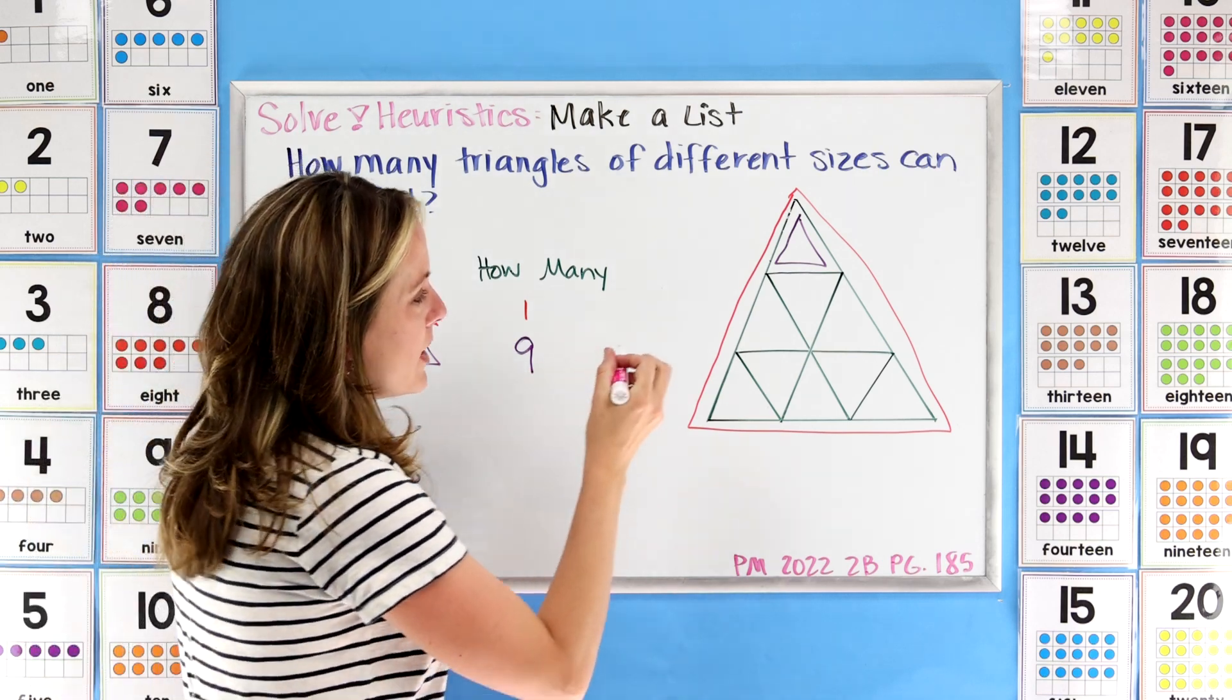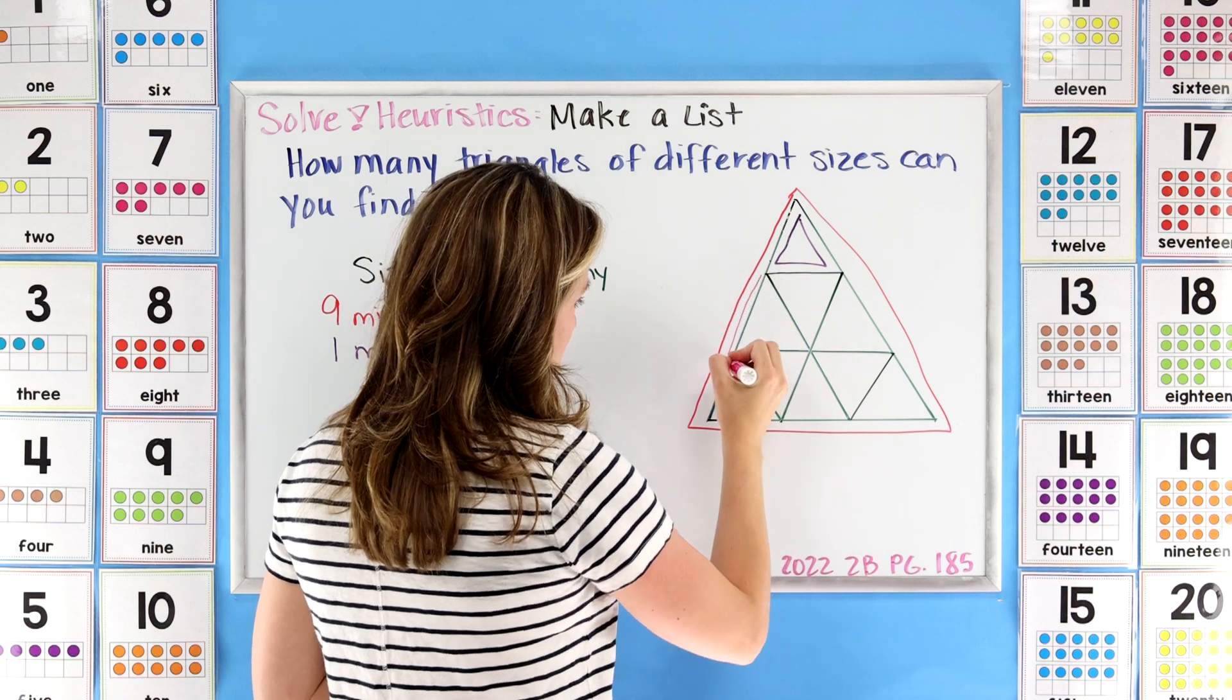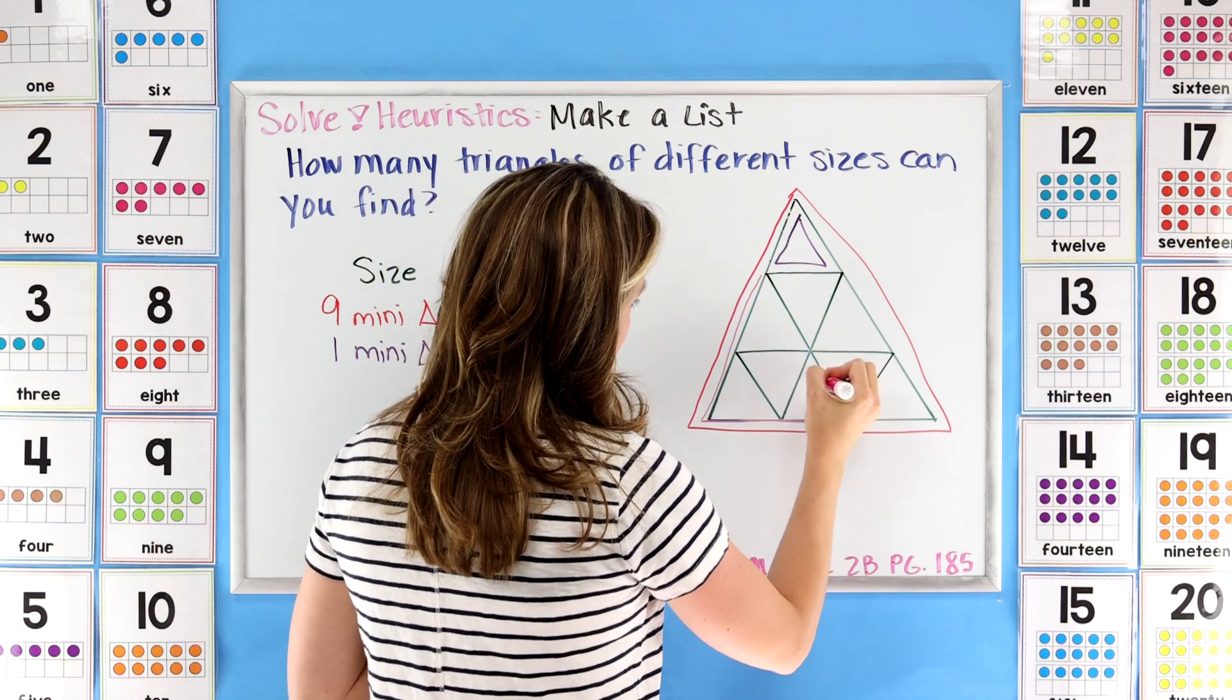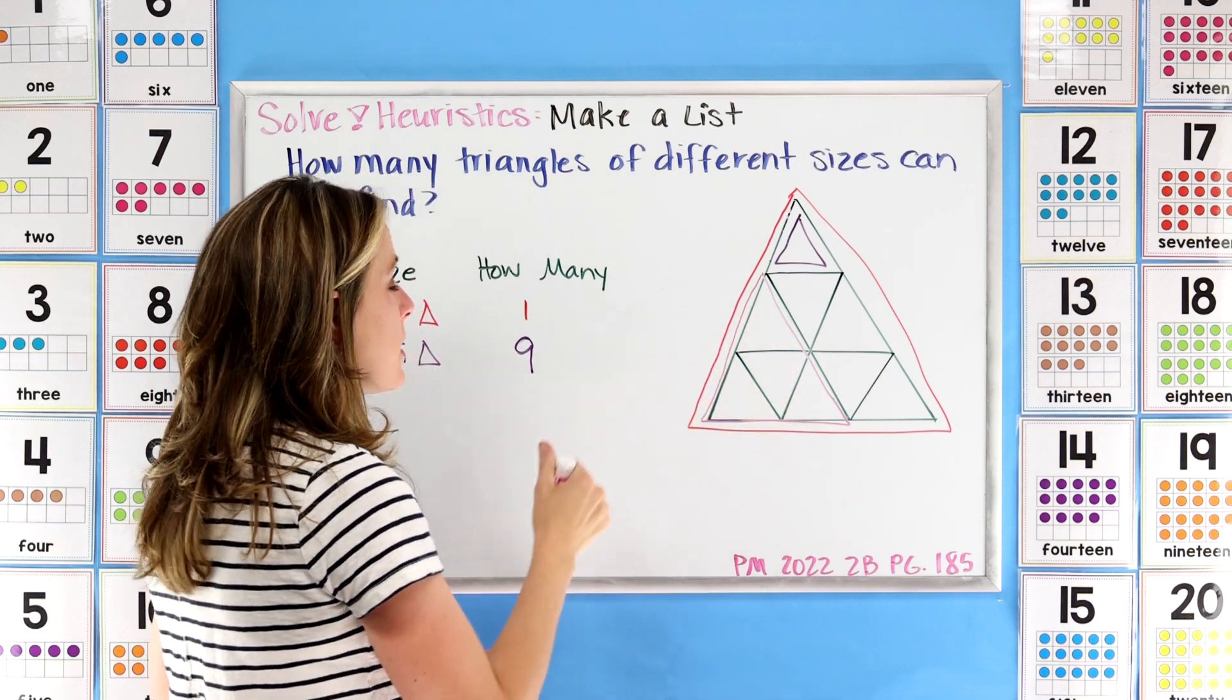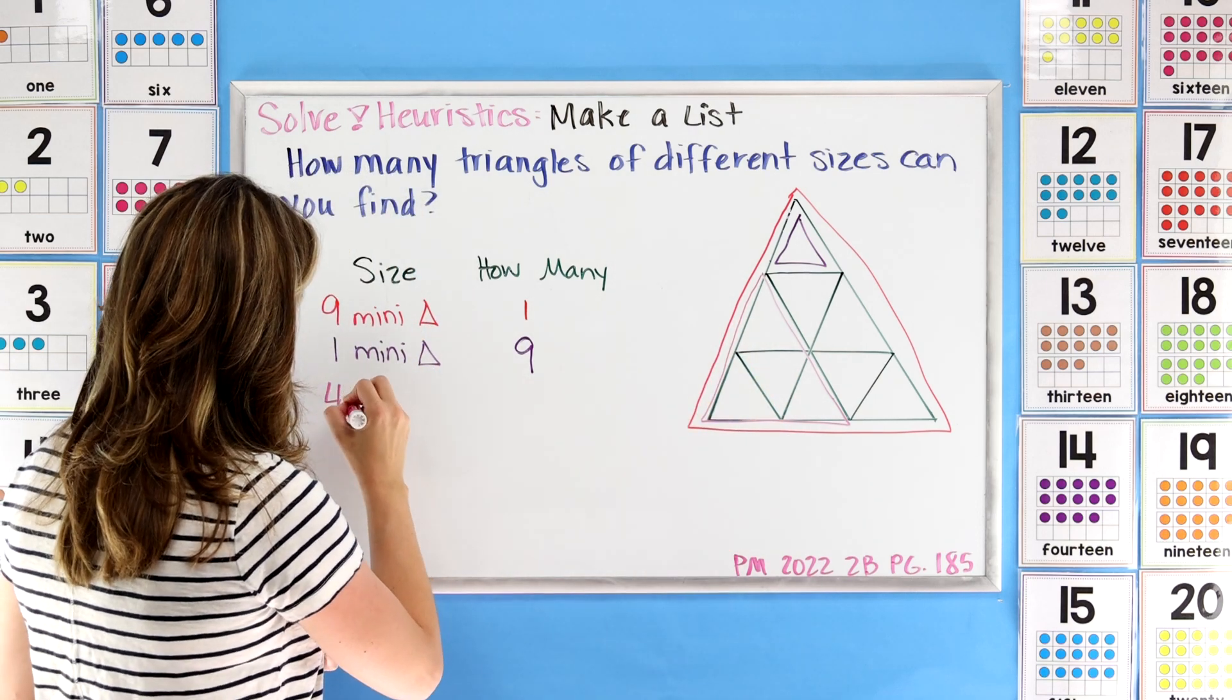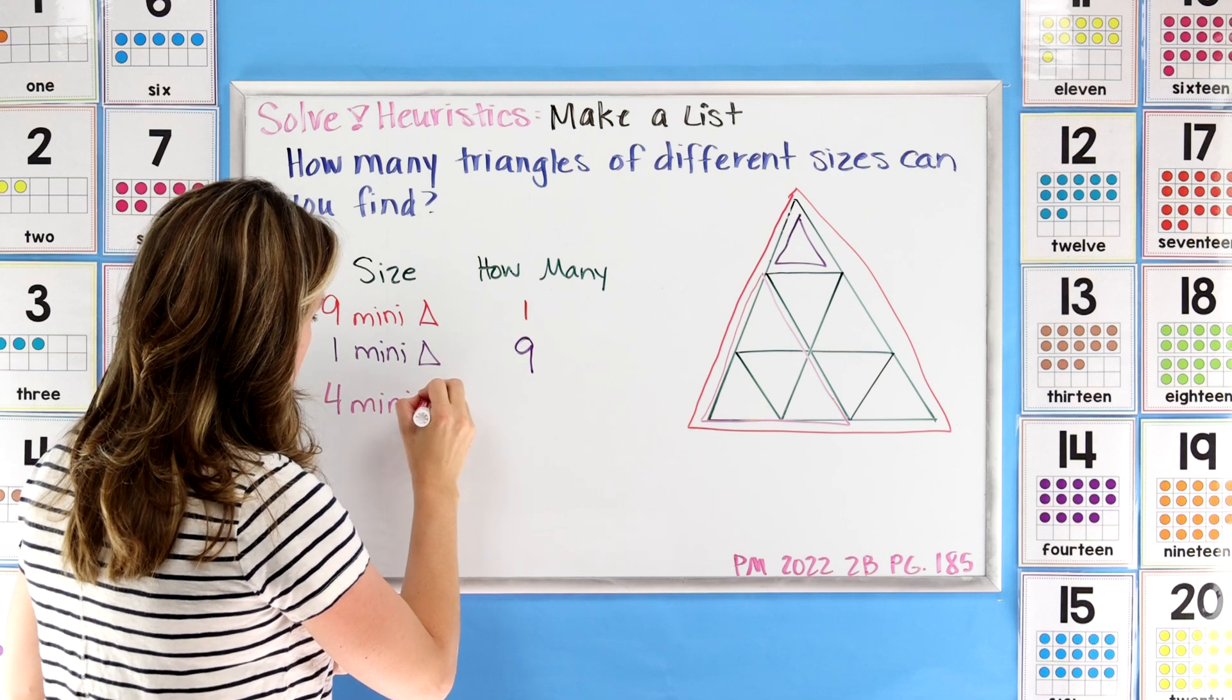Did you find any other way that you could look at a triangle? Well I noticed one right here and I'm going to draw all over this. Look at that! And that's made up of one, two, three, four mini triangles. So I'm actually going to put that here: four mini triangles.